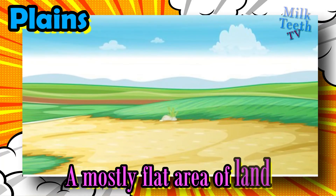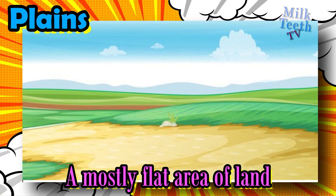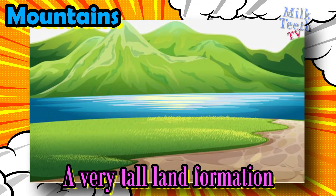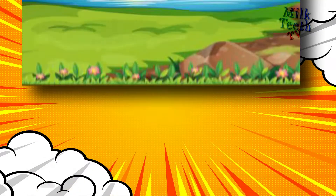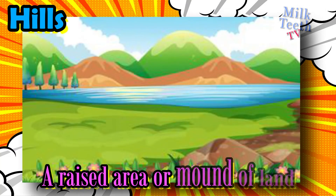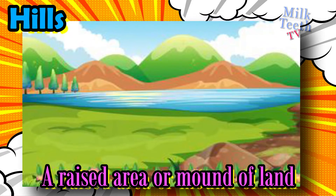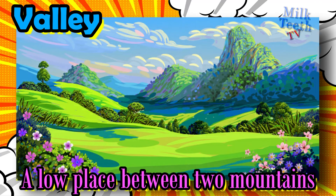Plains: a mostly flat area of land. Mountains: a very tall or high land formation. Hills: a raised area or mound of land — they are basically short-heighted mountains. Valley: a low place between two mountains.